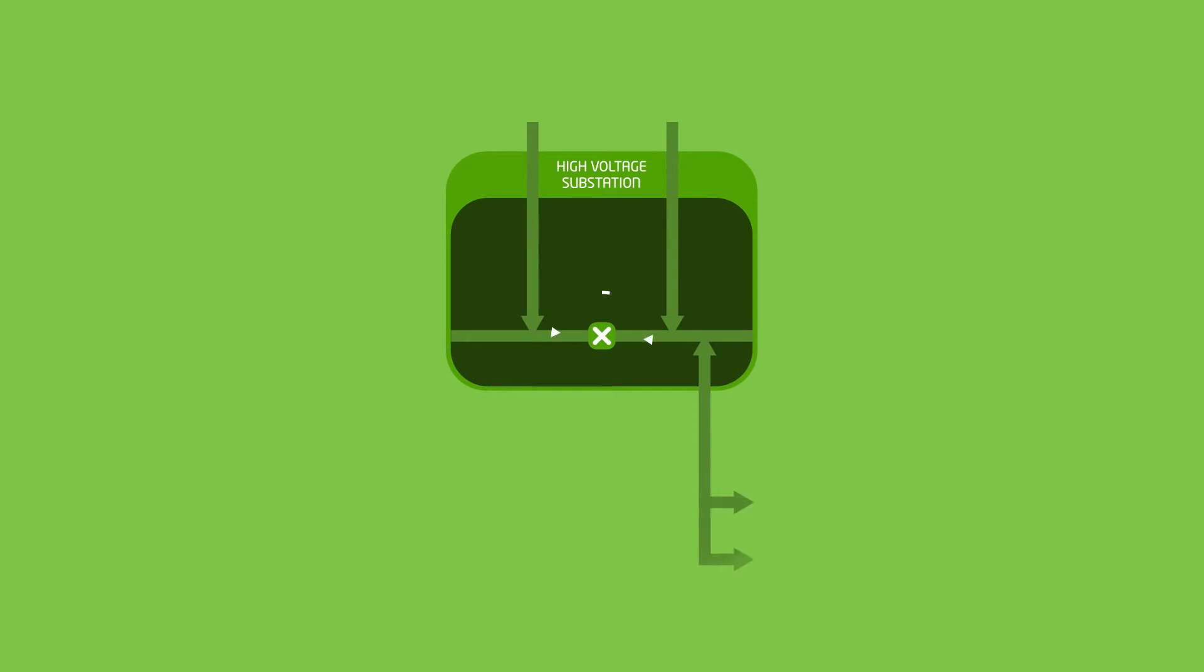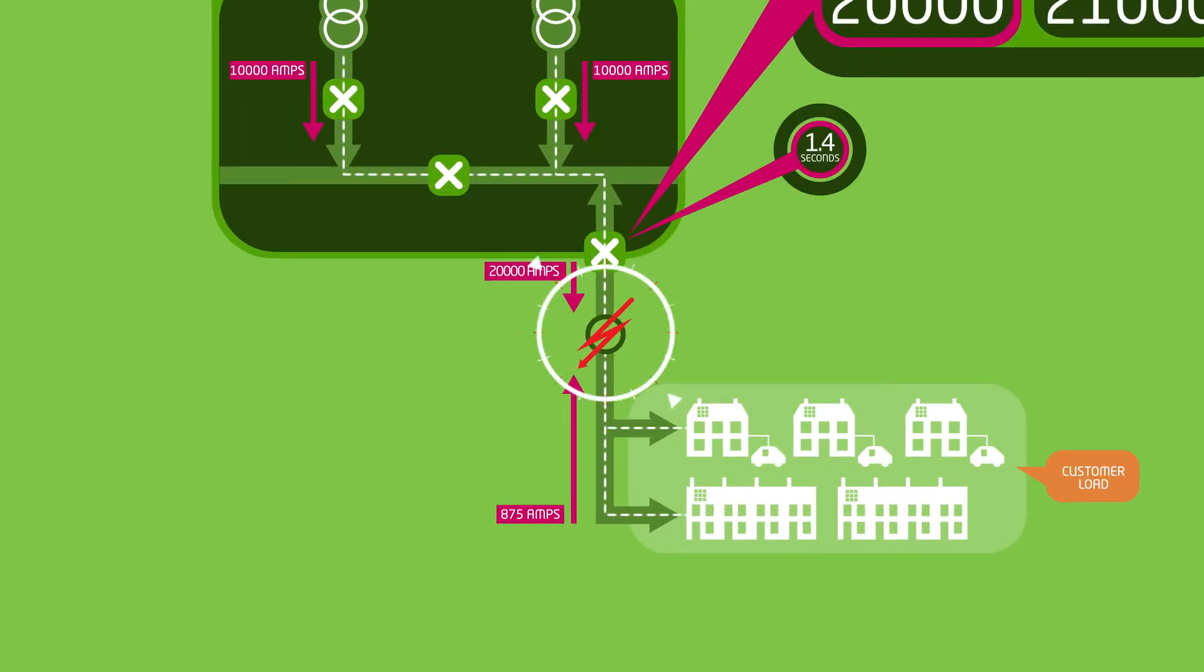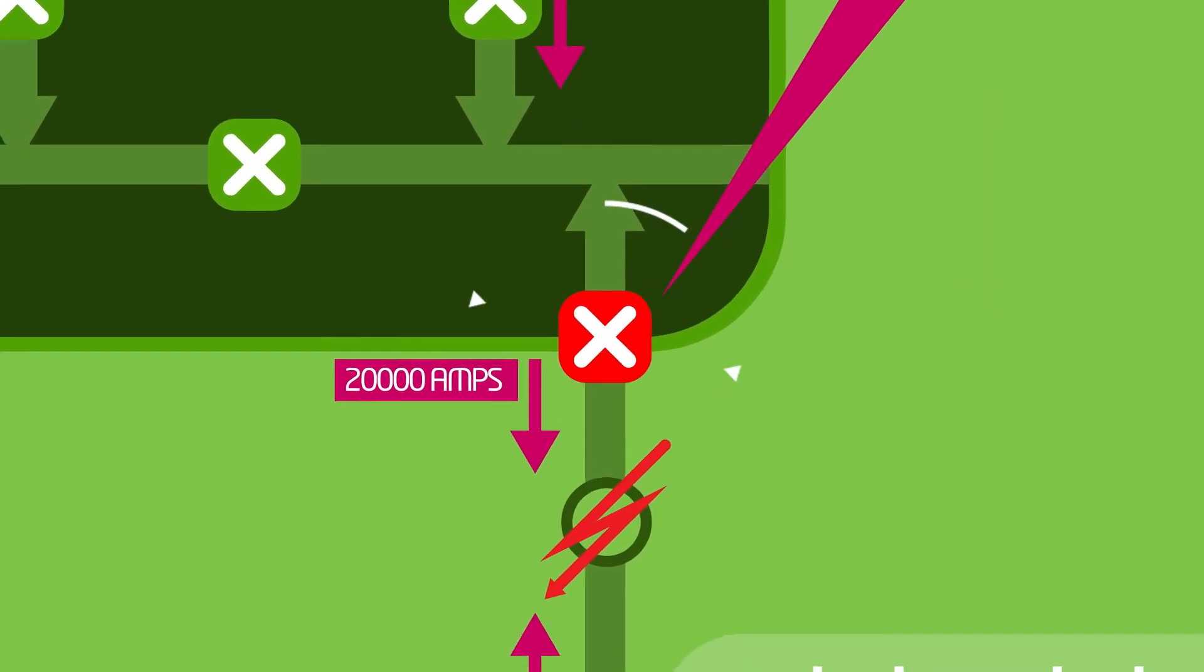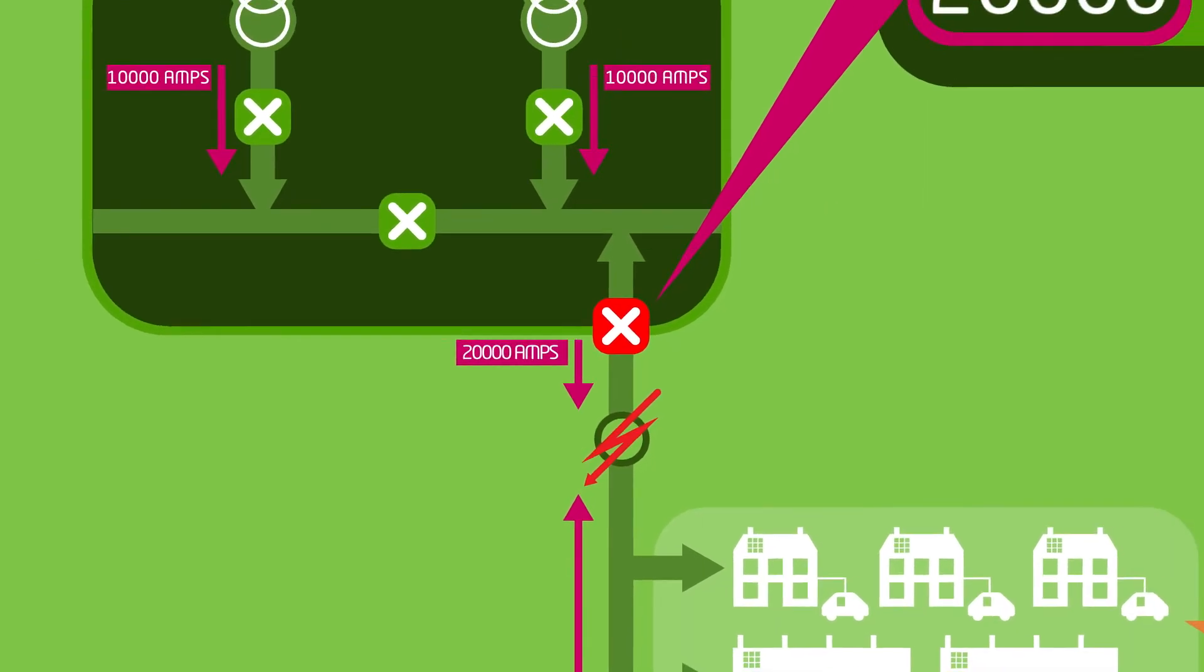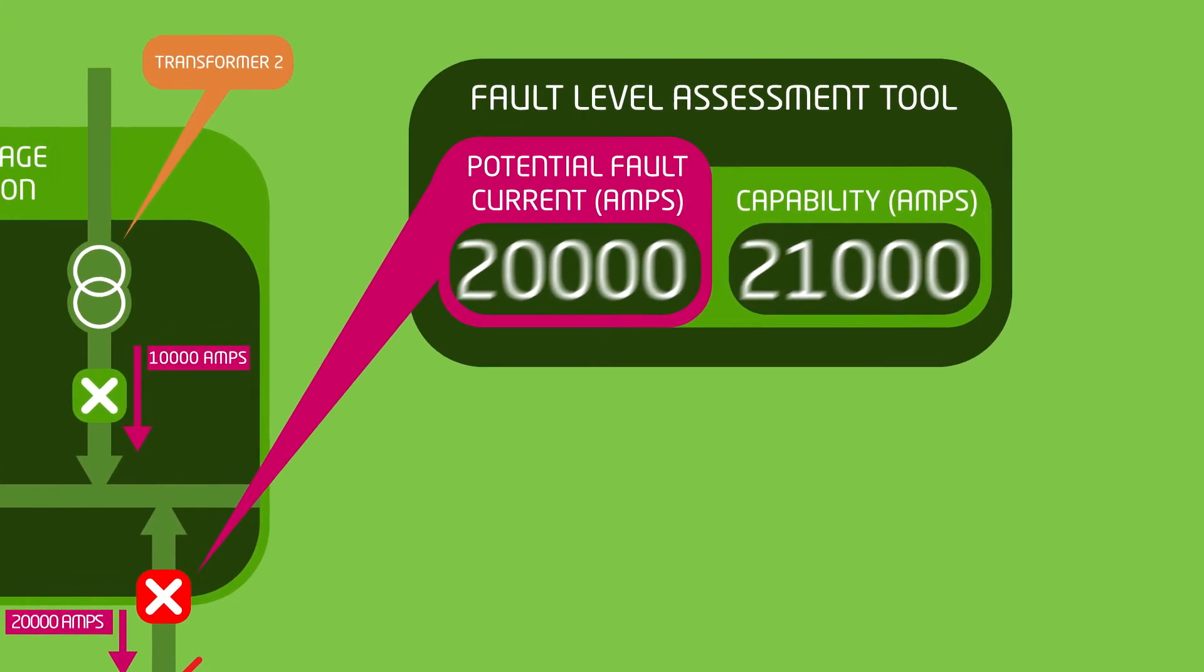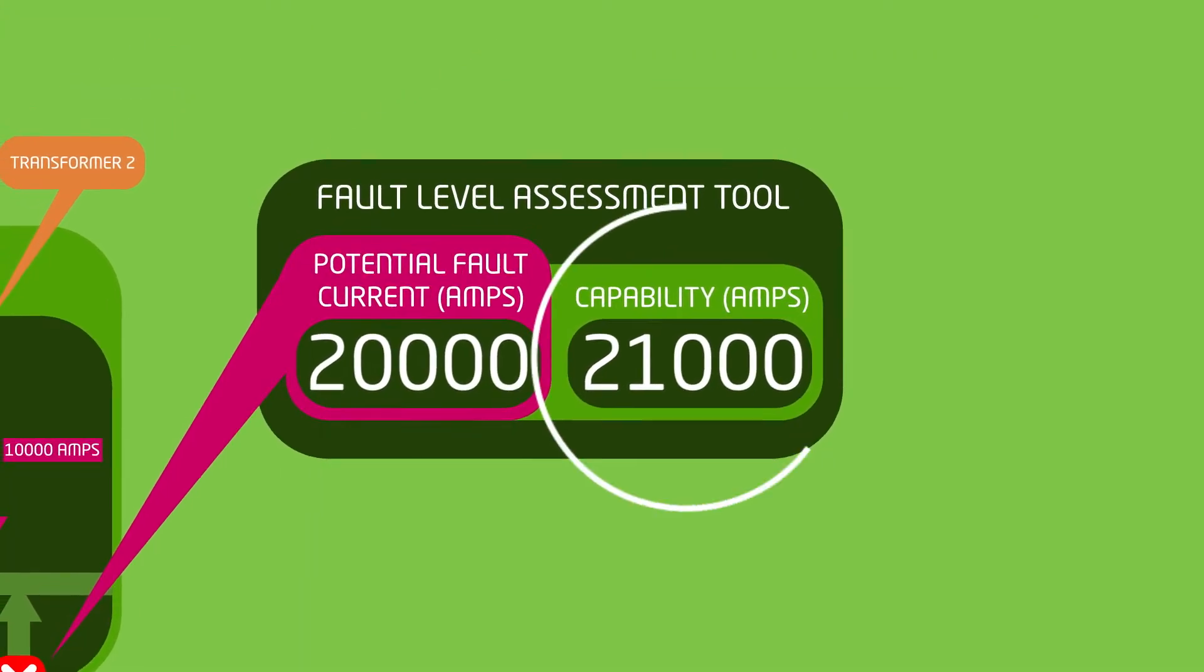This is how the network operates now. When a fault occurs, the current on the network flows directly towards the fault and is cut off by a circuit breaker, stopping the surge of fault current before it causes damage. This high voltage circuit breaker can disconnect up to 21,000 amps.